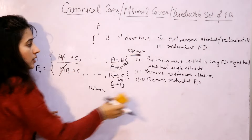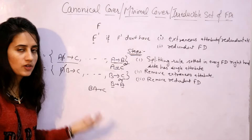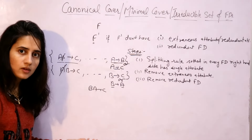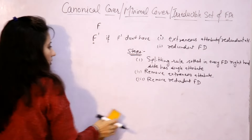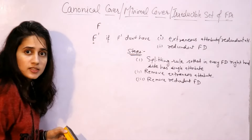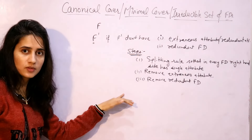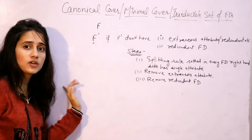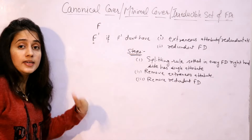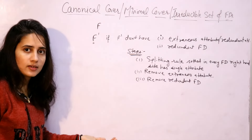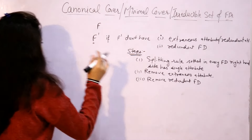We will take a proper example. After that, we will remove redundant functional dependencies. What is a redundant functional dependency? After discarding that functional dependency from the set, it still exists indirectly. We will see this with the help of an example.